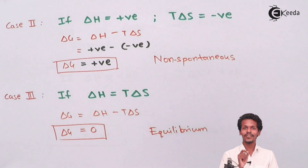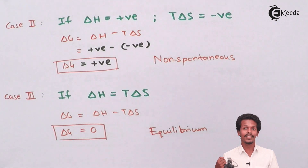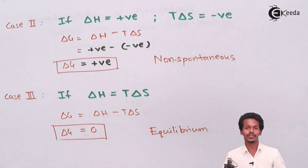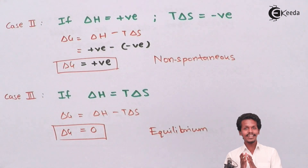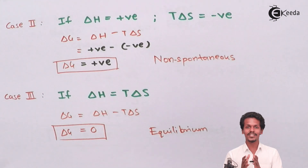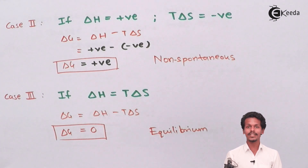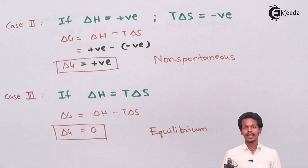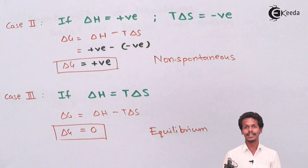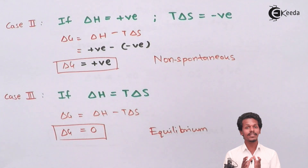It should be noted that in our previous lecture, we established that if entropy ΔS is positive, the reaction is spontaneous, and if ΔS is negative, it is non-spontaneous. This shows that entropy and Gibbs free energy have opposite sign conventions for spontaneity. Importantly, entropy does not always specify whether a reaction is spontaneous, which is why Gibbs free energy plays a more important role than entropy in predicting spontaneity.